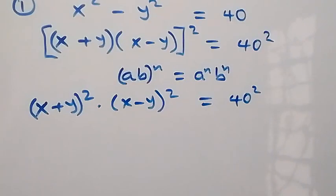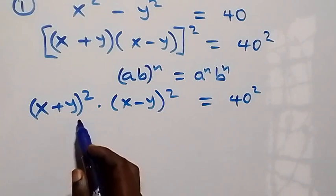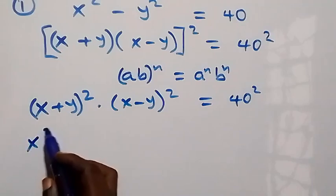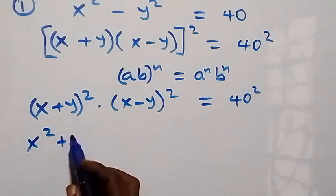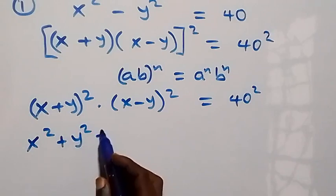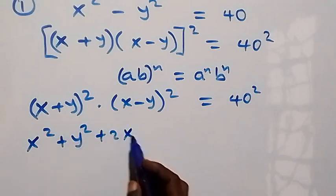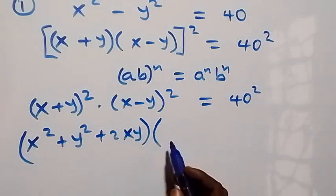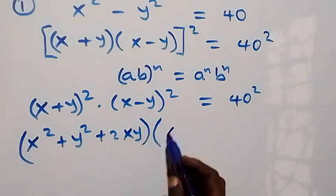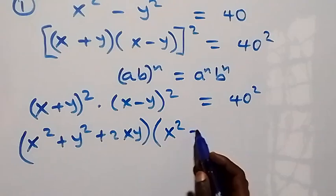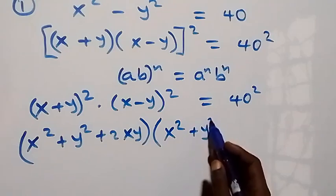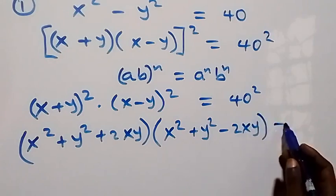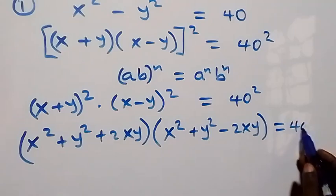From what we have here we can expand this. The expansion of (x plus y) squared is x squared plus y squared plus 2xy, and the expansion of (x minus y) squared becomes x squared plus y squared minus 2xy. So we have (x² + y² + 2xy)(x² + y² − 2xy) equals 40 squared.